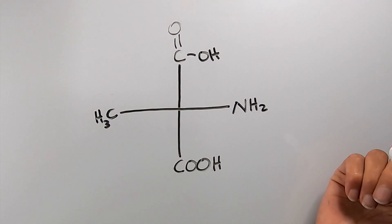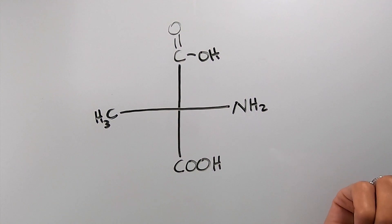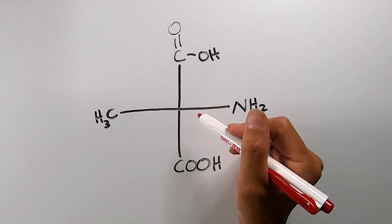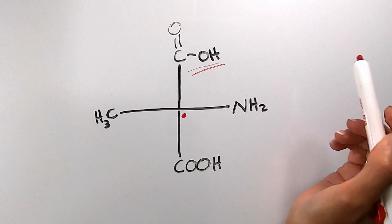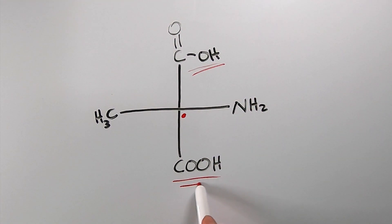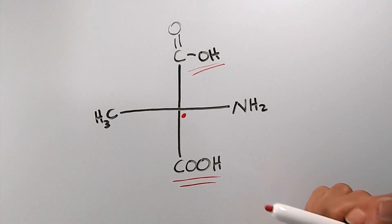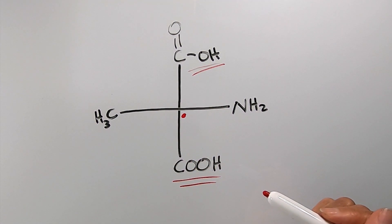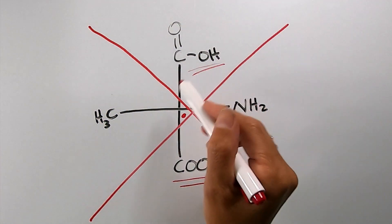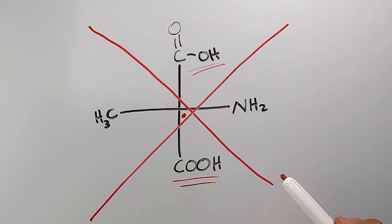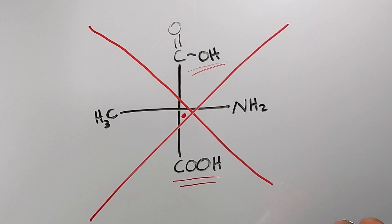Let's try one more Fischer projection. Identify the chiral carbon in the center — but wait: we have a carboxylic acid up here and a carboxylic acid down here. Even though they're written differently, they are both carboxylic acids, which means we do not have four different substituents. This is not a chiral carbon and not a chiral compound, so we will not be determining RS configuration. Always check your substituents to confirm four different groups and four single bonds before proceeding.